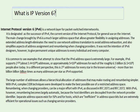IPv6 is really, really large. It is 2 to the 128 addresses, which in decimal is about 3.4 times 10 to the 38 addresses. From a different perspective, that's 2 to the 52 addresses for every star in the known universe, or more than 10 billion billion billion times as many addresses as IPv4 supports. So it's quite large.